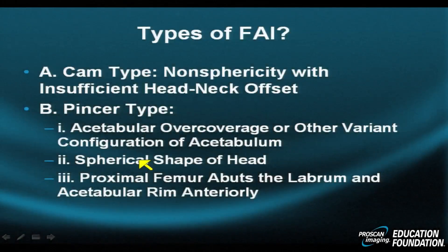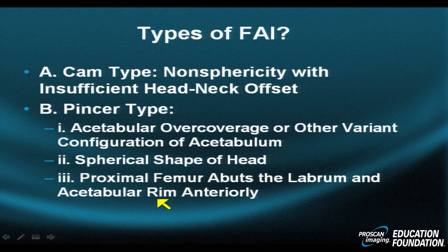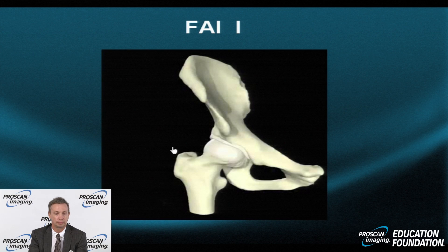In type B, or pincer type impingement, the problem is primarily acetabular. The acetabulum is often overgrown, the femoral head is sucked in as in protrusion acetabulum, and there are other acetabular variants. The spherical shape of the femoral head is relatively preserved, with no junctional alteration between the head and the neck. The proximal femur abuts the labrum and acetabular rim, especially in the far anterior quadrant, producing great pain in hip flexion.